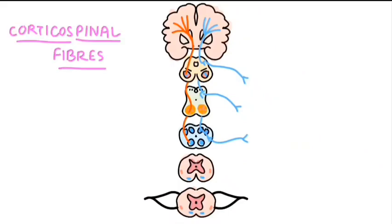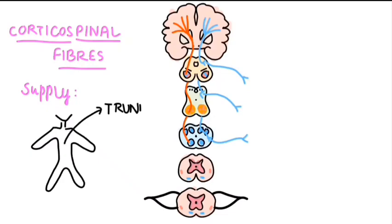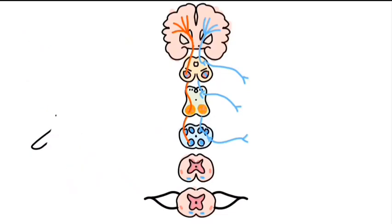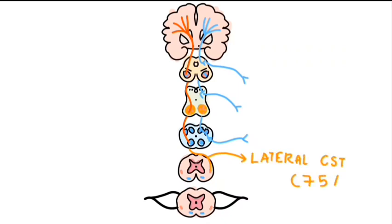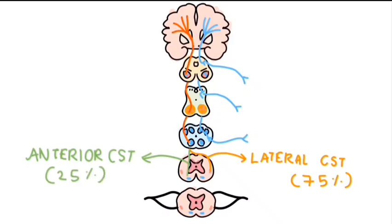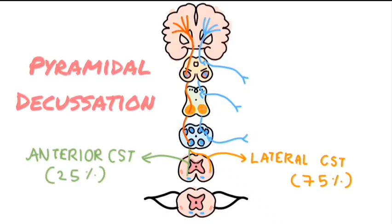In contrast, corticospinal fibers supply the muscles of the trunk, abdomen, and limbs, and hence continue down below the brain stem into the spinal cord to reach their lower motor neurons. Below the pyramids, approximately 80% of the corticospinal fibers cross over to the other side of the brain stem in what is called the pyramidal decussation.